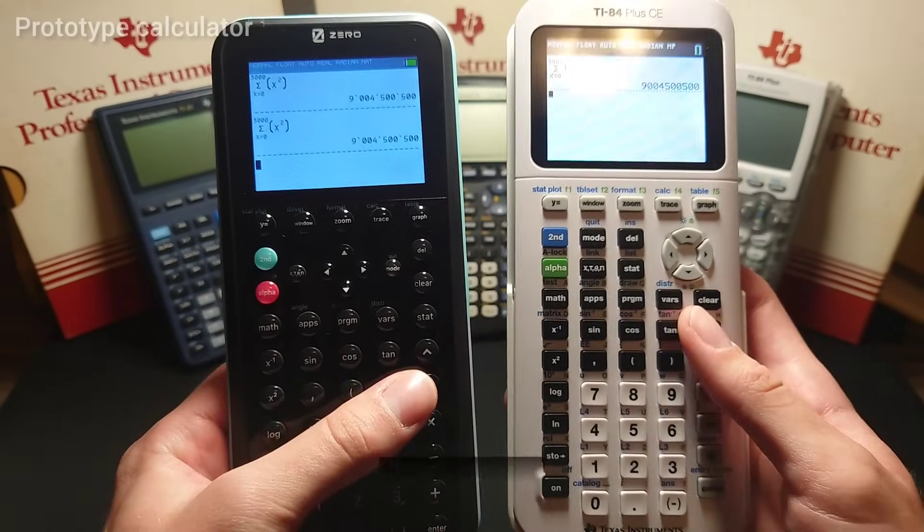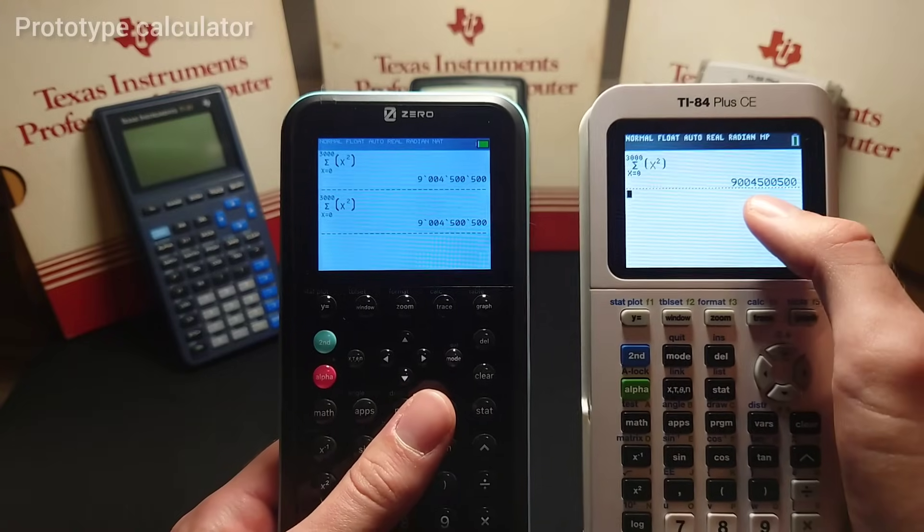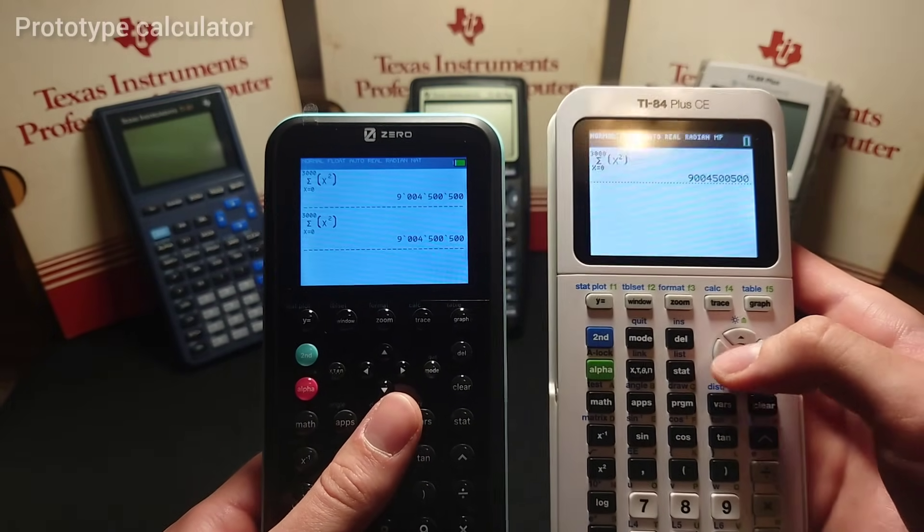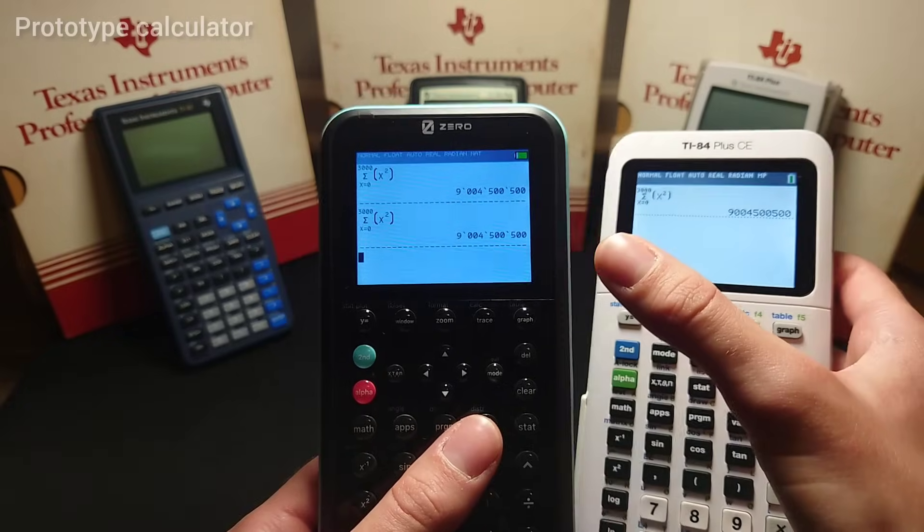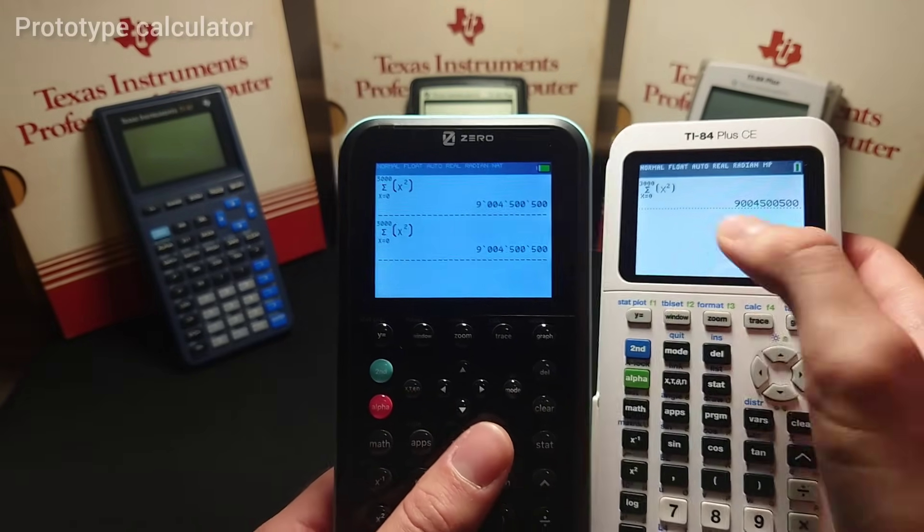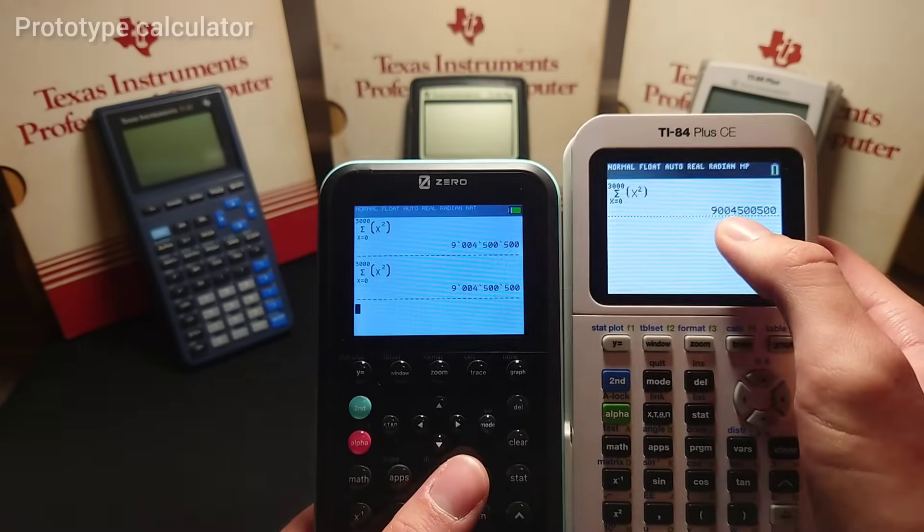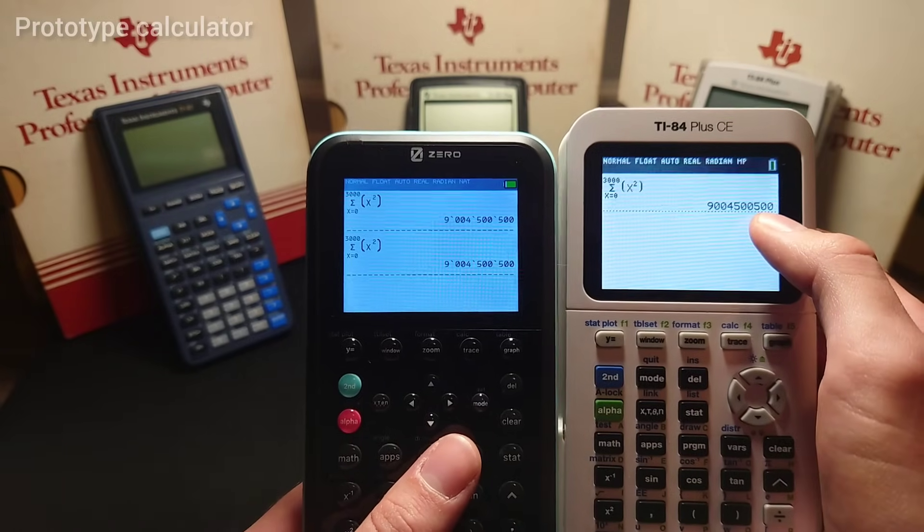Now, something you'll also notice is this is just a jumble of numbers. You can barely make out what kind of digit grouping that is. Well, the zero actually has digit grouping and shows it in the form of tick marks, so I can easily see that's 9 billion. Well, this is... those are numbers.